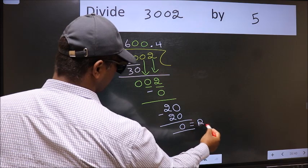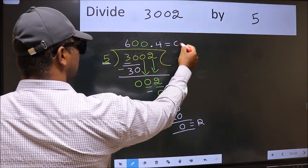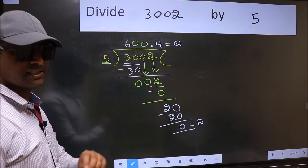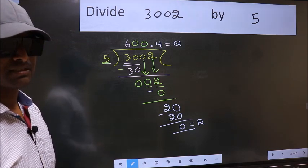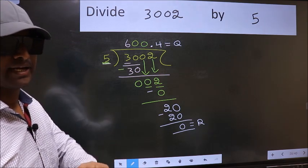This is our remainder and this is our quotient. Did you understand where the mistake happens? You should not do that mistake.